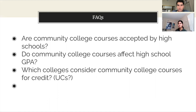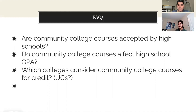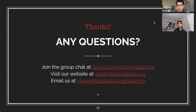What colleges consider community college courses for credit? Many well-known colleges, including Ivies such as Harvard and Stanford, accept community college credits. UCs have an agreement with the California community colleges on which courses they accept as UC credit, known as the TCA or Transfer Course Agreement. Thank you for watching. If you have any questions, you can ask them in our group chat or email us at dreambigorgg2021@gmail.com.